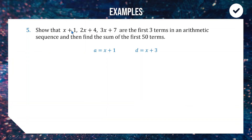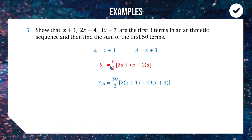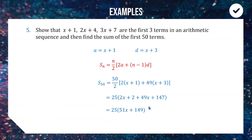The first term is a = x + 1 and common difference is d = x + 3, confirmed by (2x + 4) − (x + 1) = x + 3. Using the sum formula with n = 50, a = x + 1, d = x + 3, and n − 1 = 49: we get 25(2x + 2 + 49x + 147), which simplifies to 25(51x + 149), giving the fully simplified answer of 1275x + 3725.